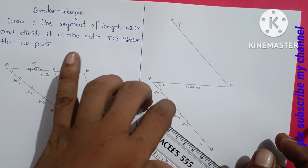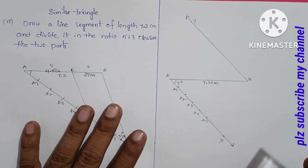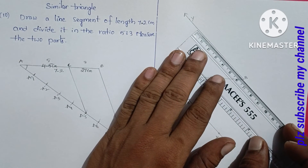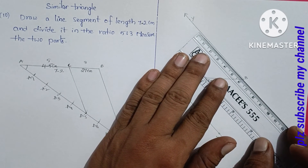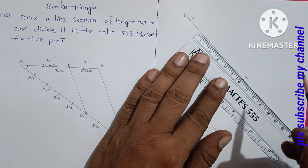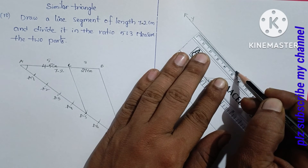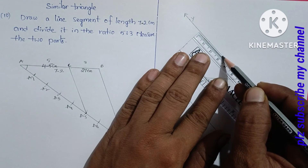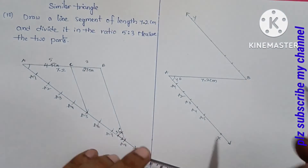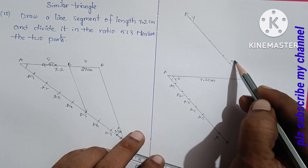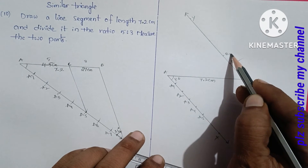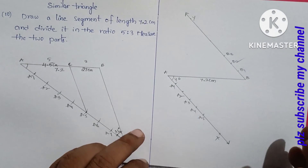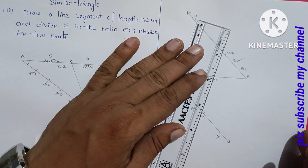If we add the same, 1 to 1 cm. This is B1, B2, B3. Join A5 and B3.